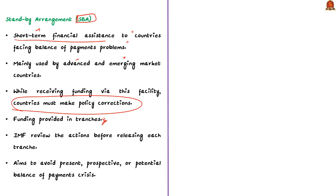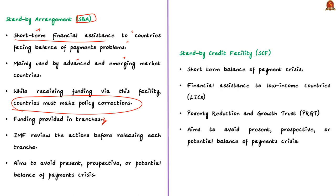The second one is the Standby Credit Facility or SCF. The SCF provides financial assistance to low-income countries with short-term balance of payment needs. It is one of the facilities provided under the Poverty Reduction and Growth Trust PRGT of the IMF. Both SBA and SCF are provided to avoid present, prospective, or potential balance of payment crises.